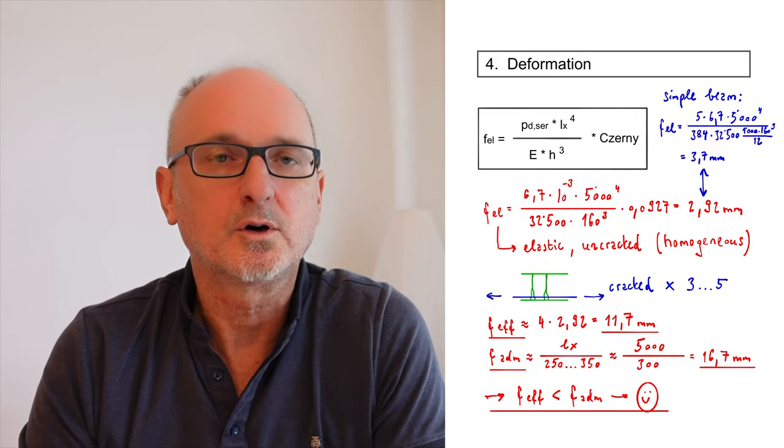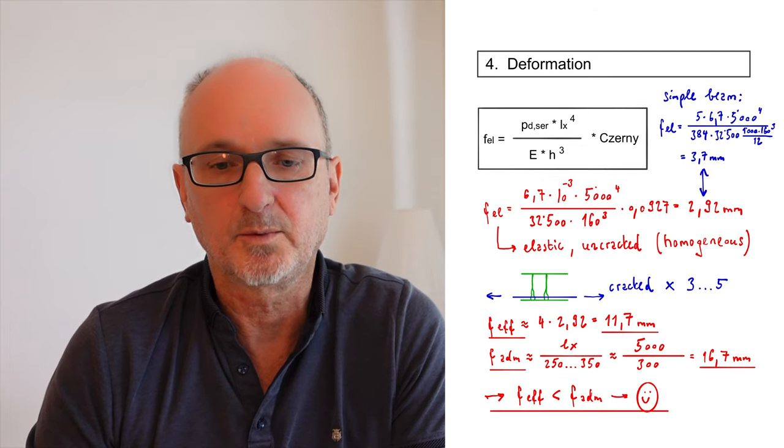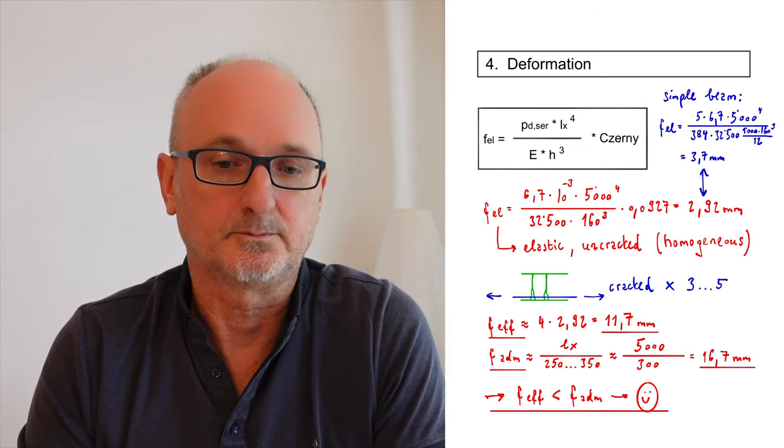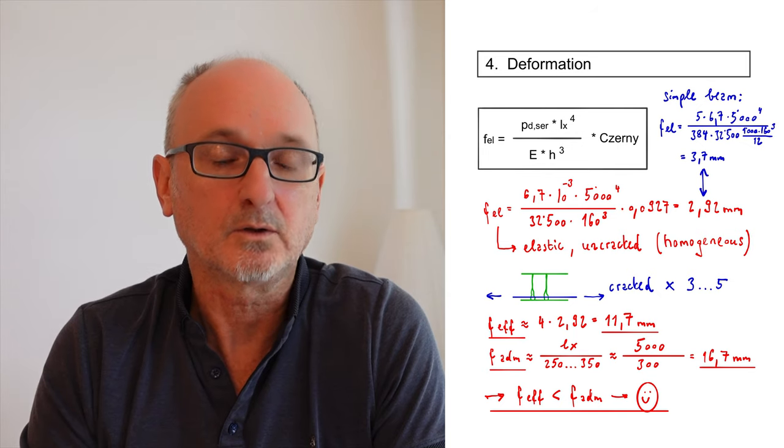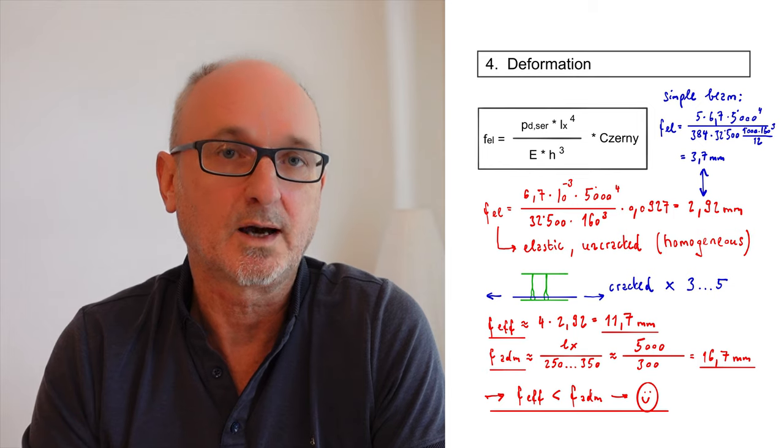Returning to the paper experiment at the beginning: comparing with a simple beam, using the simple beam formula you end up with an elastic deformation of 3.7 millimeters, which is considerably higher than the 2.9 millimeters of the two-sided supported slab. Now we have checked the deformations.